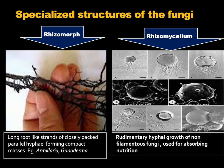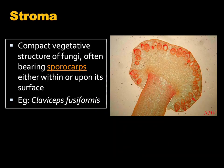Rhizomorph and rhizomycelium are another two types of specialized structures produced by many fungi. Rhizomorphs are long, root-like strands of closely packed parallel hyphae forming compact masses. Organisms like Armillaria and Ganoderma produce rhizomorphs. Rhizomycelium, on the other hand, are the rudimentary hyphal growth of non-filamentous fungi, and they are used by fungi for absorbing nutrition from the host cell for growth and development. Stroma are also specialized structures — compact vegetative structures of fungi, often bearing sporocarps either within or upon their surface. Organisms like Claviceps fusiformis produce stroma during their life cycle.